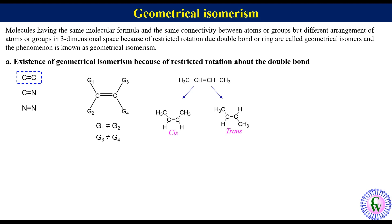There is one more nomenclature which is universal for all alkenes, called EZ nomenclature. To determine EZ configuration, the groups on each carbon are labeled as 1 and 2, where 1 is of higher priority and 2 is lower. The isomer with the same priority groups on the same side of the double bond is called the Z isomer, while that having same priority groups on opposite sides is called the E isomer. For more details about EZ isomerism, I have made a separate video — you can find the links in the description box or by clicking the i button.